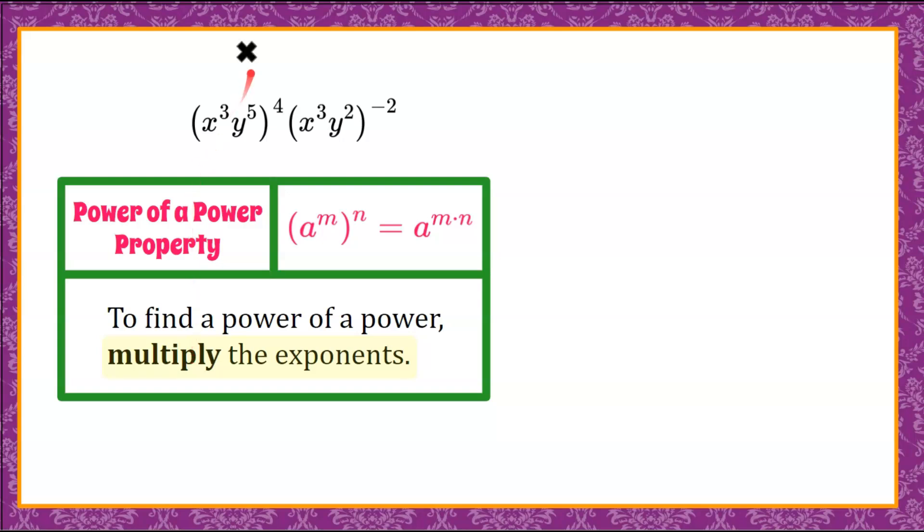So let's go ahead and do that. We're going to start here, where we know we're multiplying. Just as a reminder, power to a power, we're going to multiply. Our base is x, and then our exponent is going to be 3 multiplied by 4. Then we have to go to the second term, y to the 5th. We're going to keep our base of y, and we're going to multiply 5 times 4.